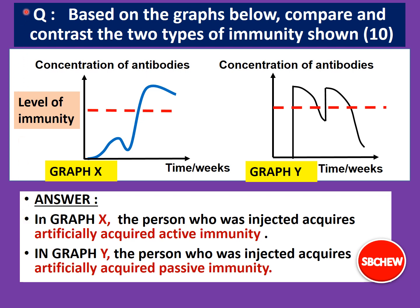Here's the question. Based on the graphs below, compare and contrast the two types of immunity shown. This is a question on comparison — compare and contrast — meaning we must write both the similarities and the differences. Looking at the allocation of marks, since it's 10 marks, you need to have 10 points including differences and similarities. This type of comparison question is quite common in the SPM and other exams.